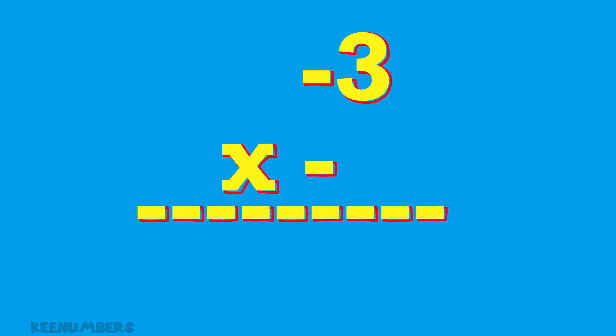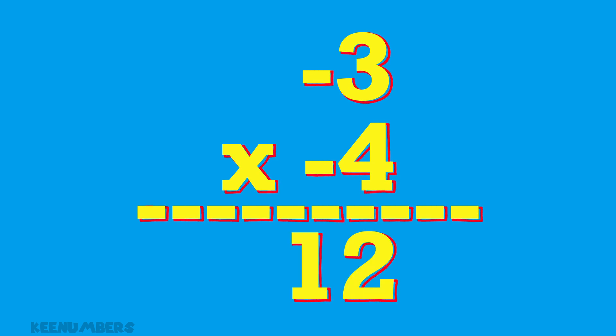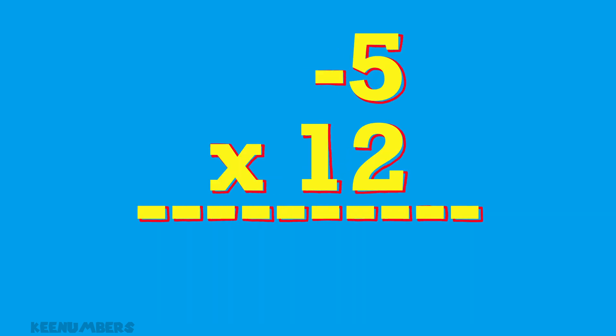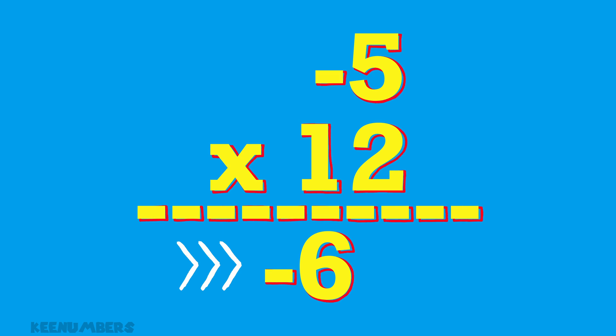What's negative 3 times negative 4 times negative 5? The good news is negative 3 times negative 4 is positive 12, and a negative times a positive is negative. So your final answer is negative 60.